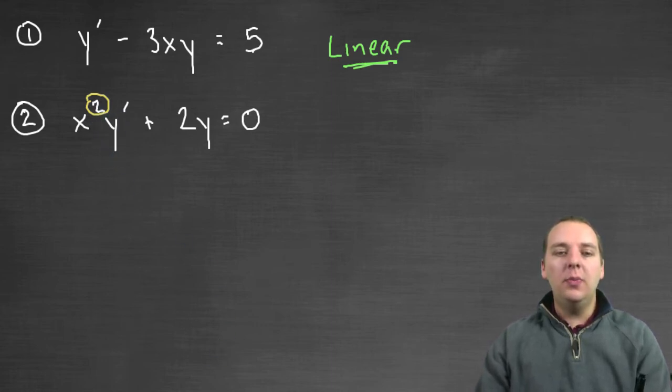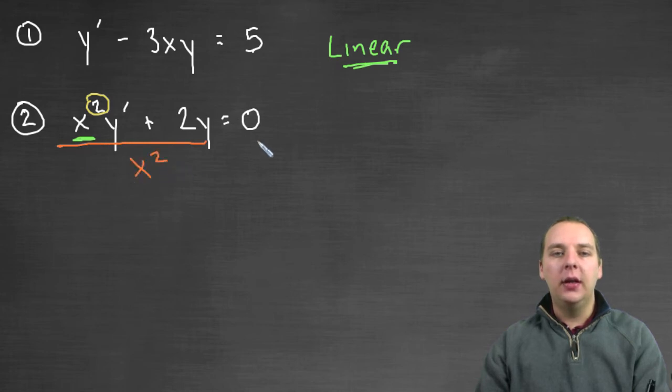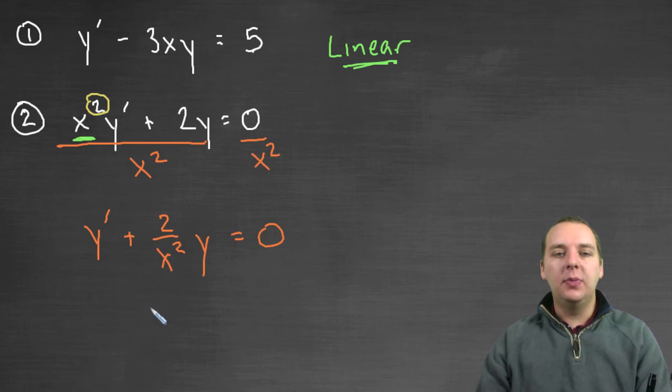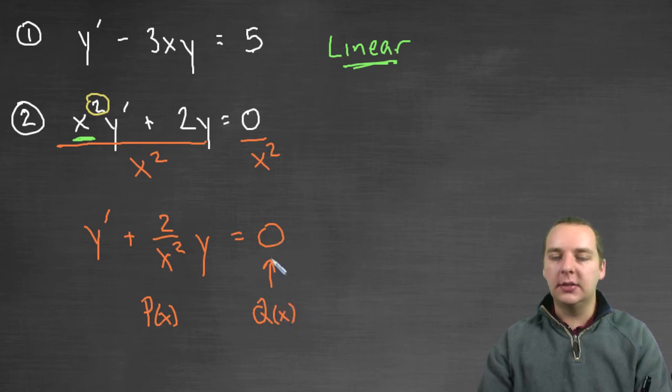Another issue would be, what about the fact that this is a coefficient of y prime? So what we could do in this situation is we could divide the left side by x squared and divide the right side by x squared. This would become y prime, because they would cancel, plus 2 over x squared y equals zero. These are equivalent. I just algebraically manipulated the terms. And I have a coefficient of one now. This would be like my p of x times y. And this could be considered as my q of x, zero, just a constant.